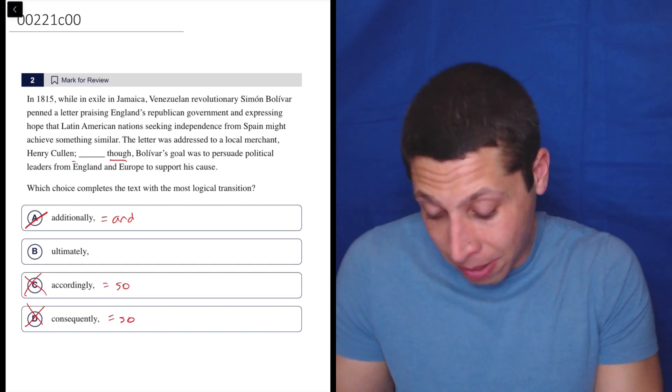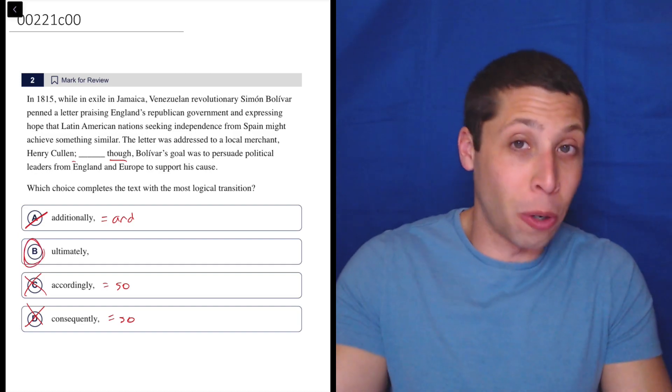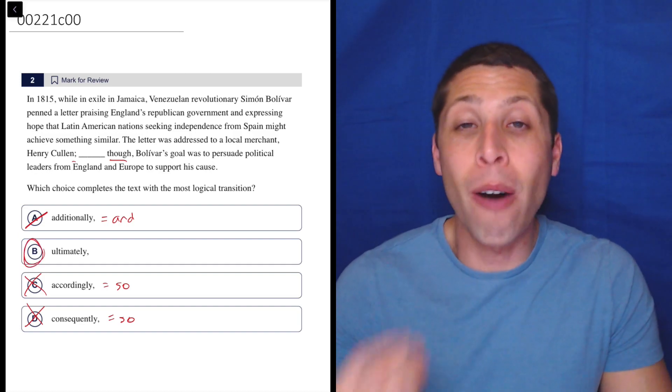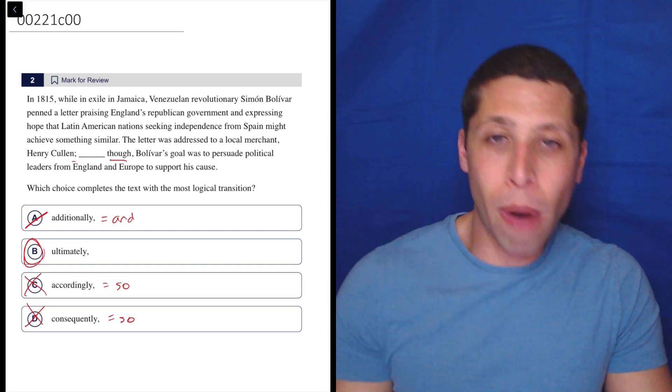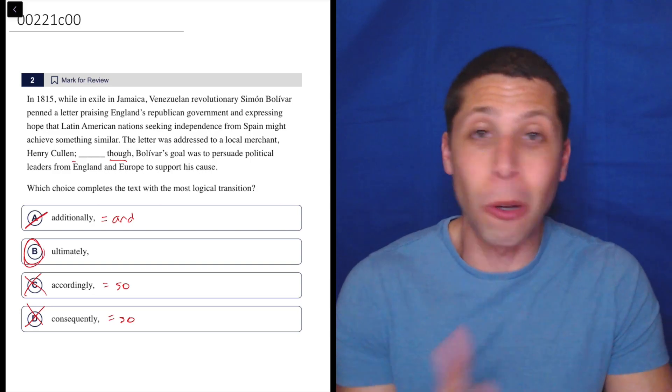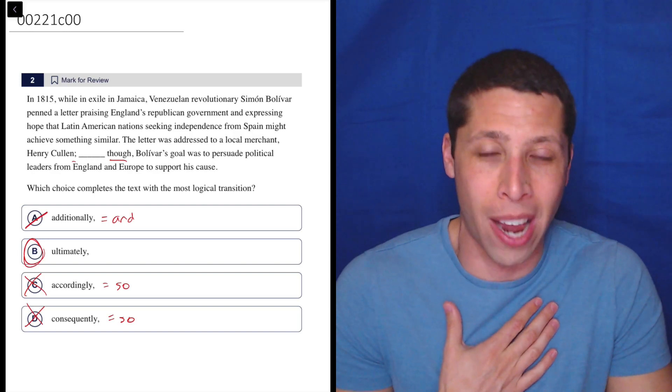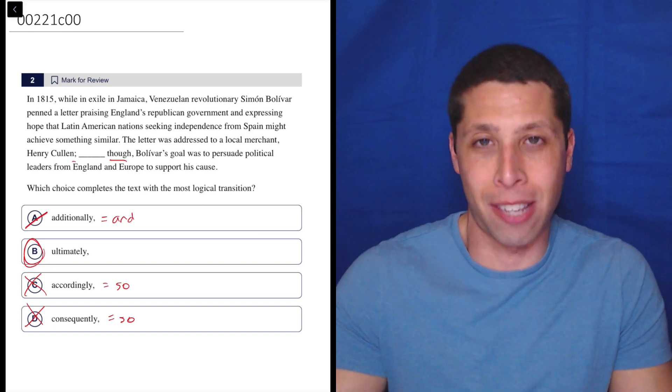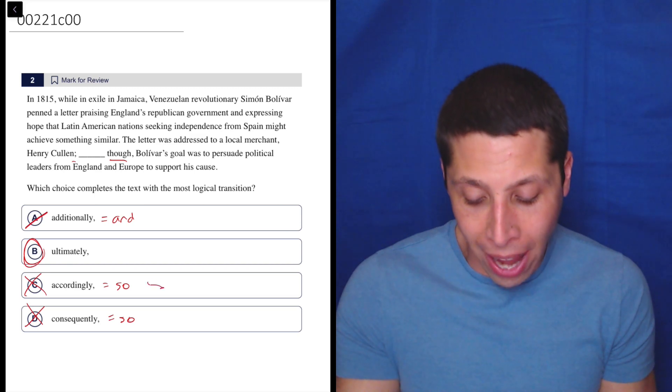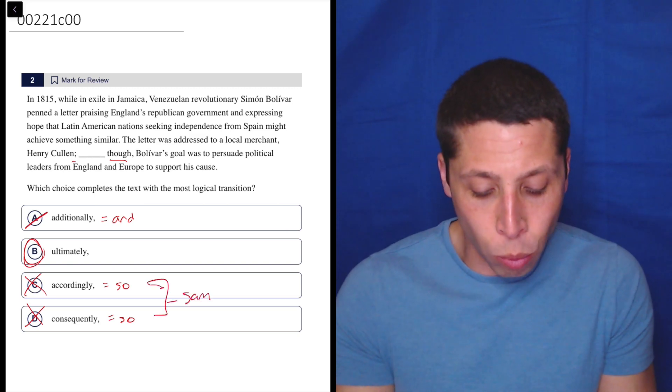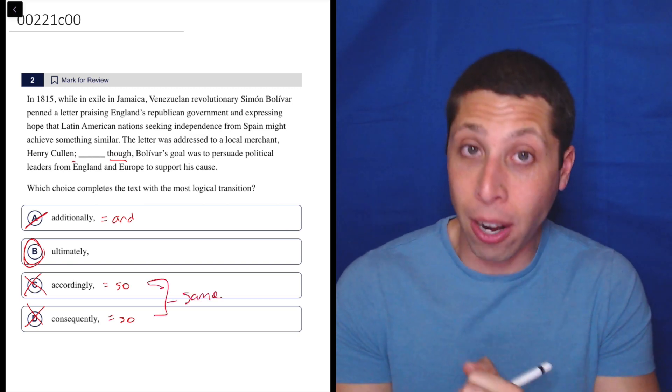That leaves us with the weird choice that we overlooked before, choice B. And that's okay. This is sometimes how we get these transition questions. Process of elimination is totally fine on these questions. A lot of times, the only reason I get the transition questions right is because I know what the wrong answers are. So you have to use strategies like this one and cross out words that fit the same category.